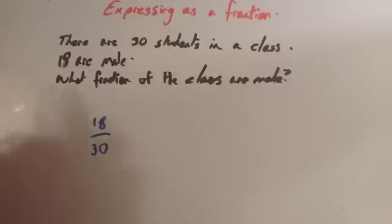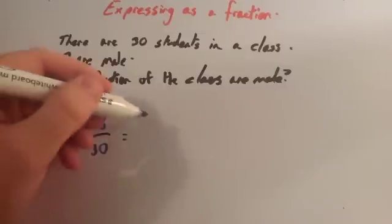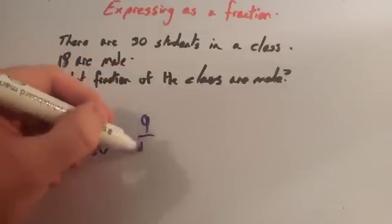Now, you'd want to be able to cancel down this fraction. Watch the video on simplifying fractions now. So, 18 out of 30, well, both of these numbers you can divide by 2. So if you divide both of them by 2, you would get 9 over 15.